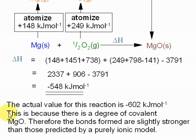And this is because there is a degree of covalent character in magnesium oxide. And therefore, the bonds formed are slightly stronger than those predicted by a purely ionic model. And Born-Haber is a purely ionic model.